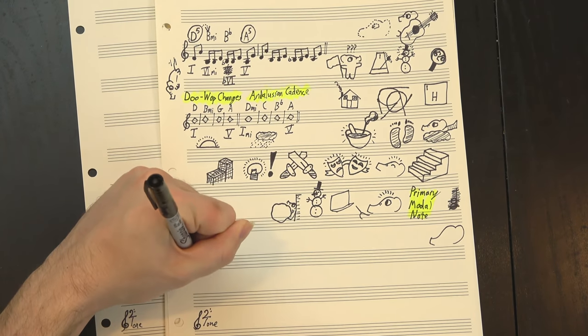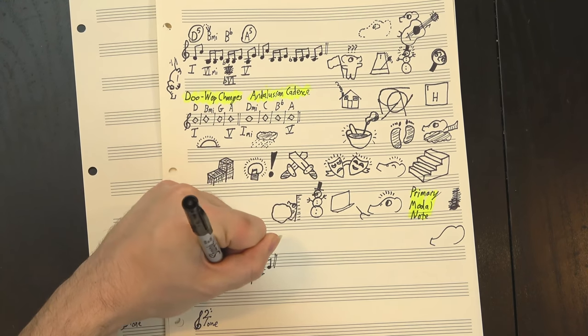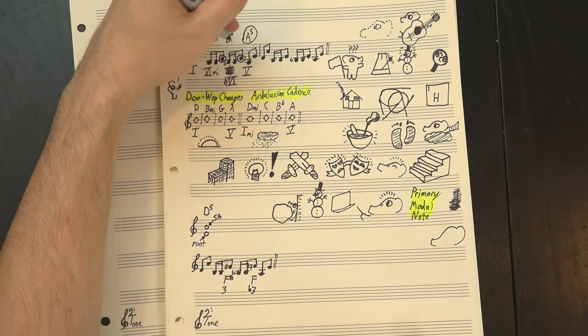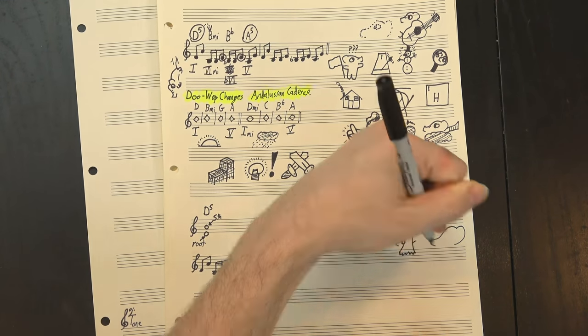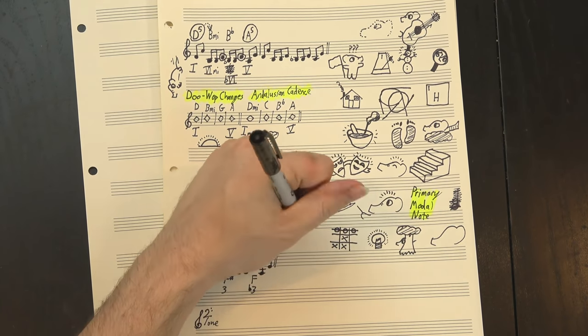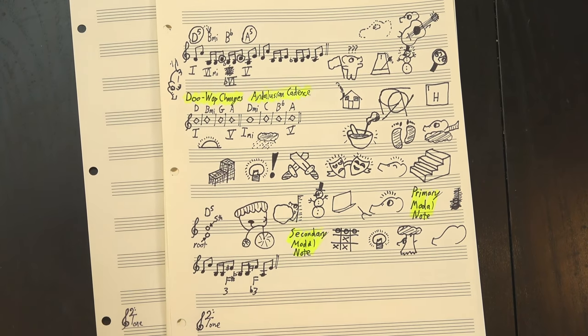He also ends on a power chord, establishing that as his primary chord shape, but in the middle, things get tricky. If you played them all as power chords, it'd sound like this, but then he'd have to use either F or F-sharp, which would give us a third to work with, so instead he switches to playing the root and third of the chord in order to hide the third of the key. Normally, this wouldn't be a problem.